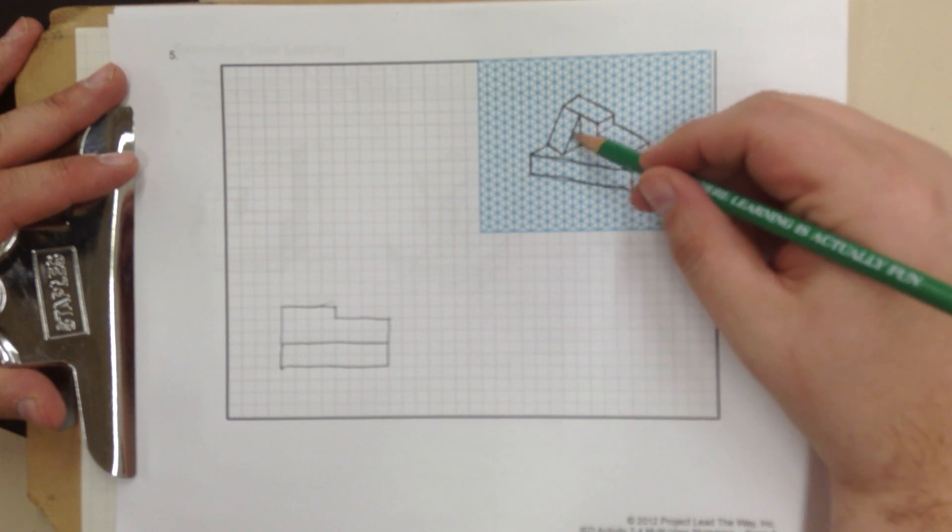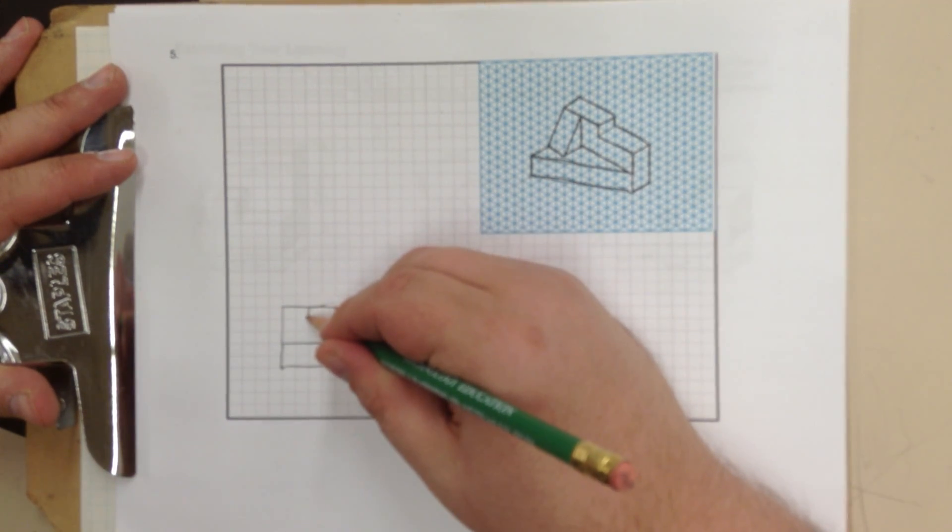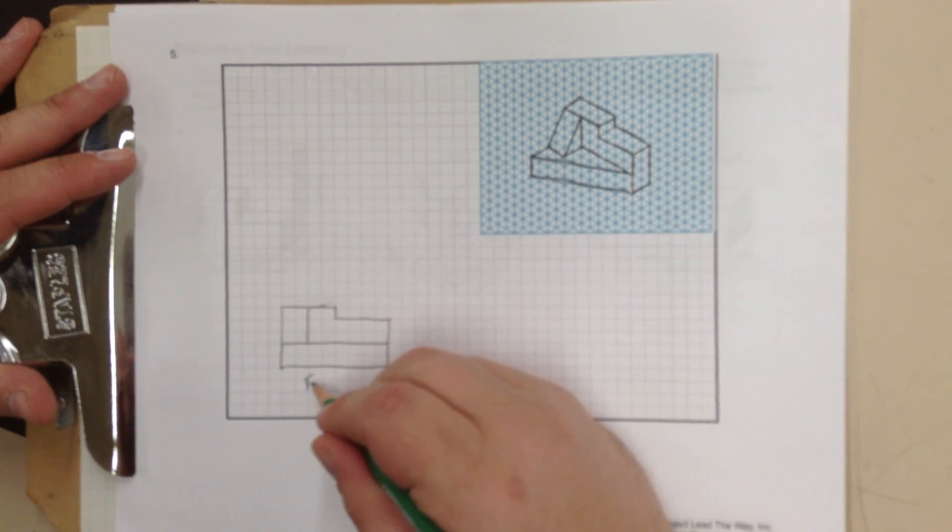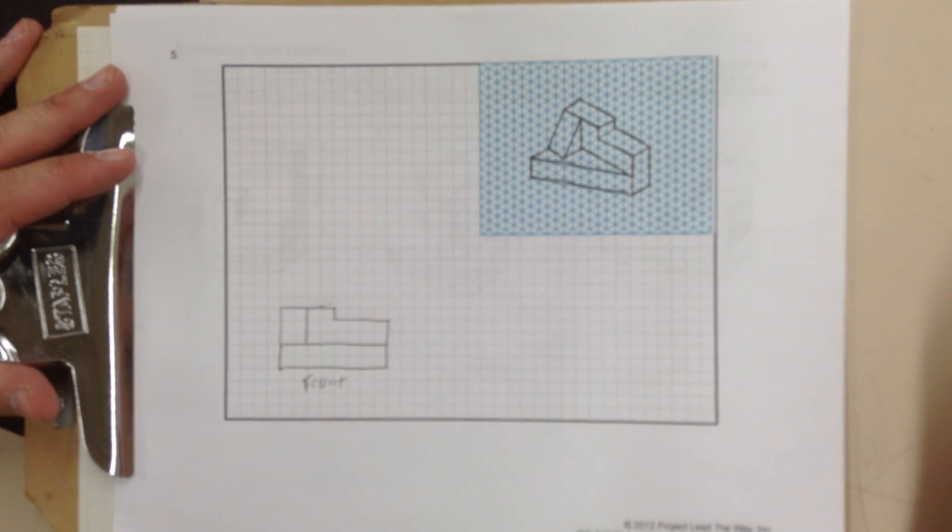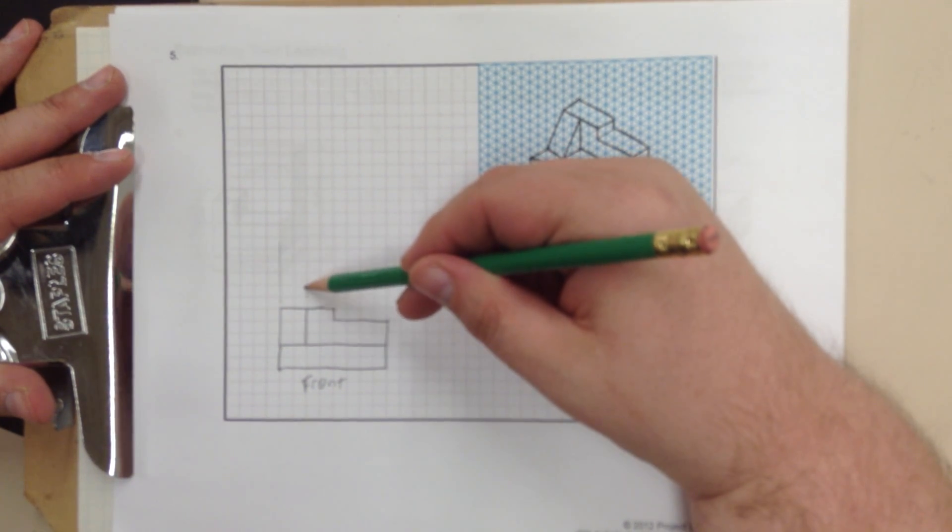Then I have this detail to contend with, which is 2 wide, and it intersects with that line. So that right there. This is my front view of this object. Drawing some construction lines up, corresponding with all my details.